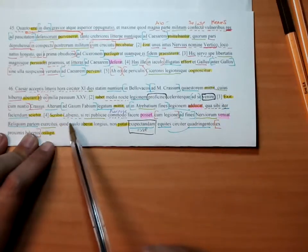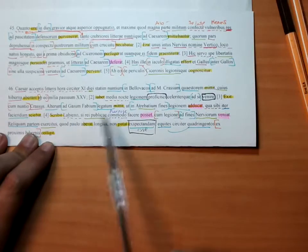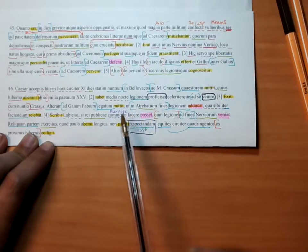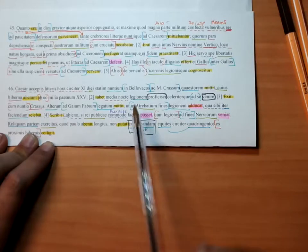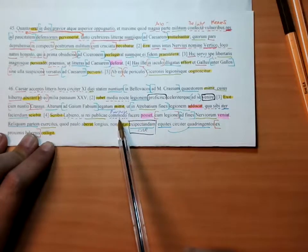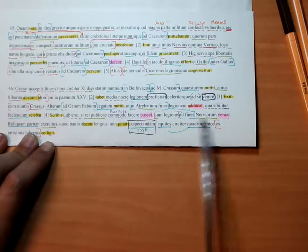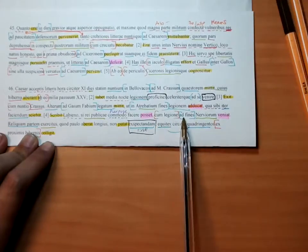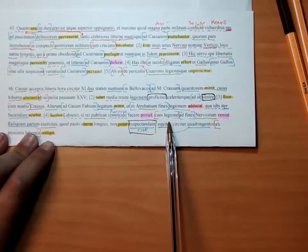He writes to Labienus. If he were able to do it for the advantage of the Republic, he should come to the borders of the Nervians with the legion.